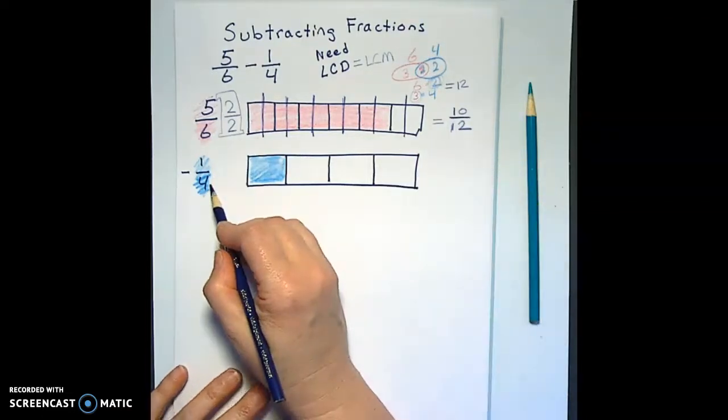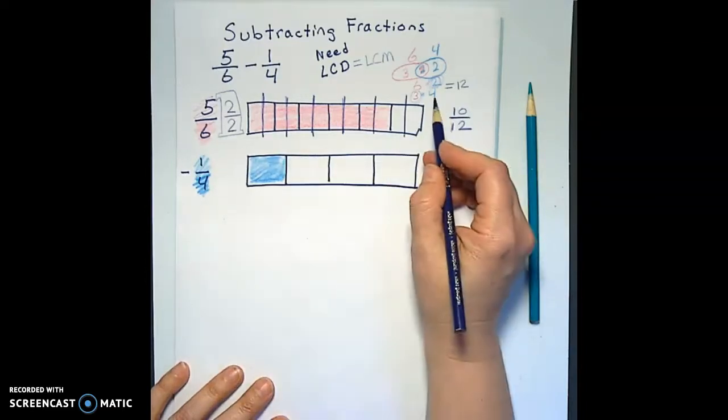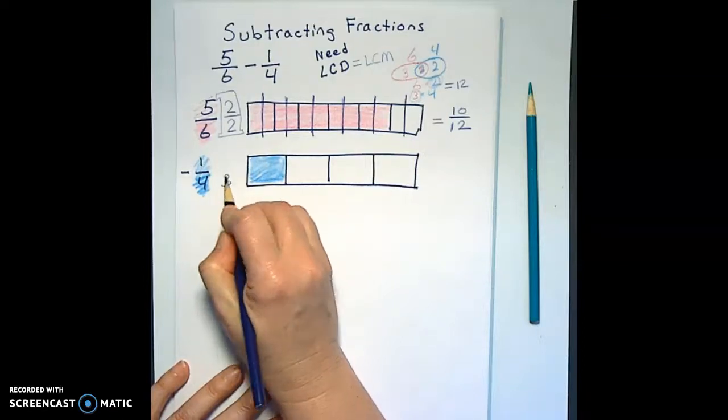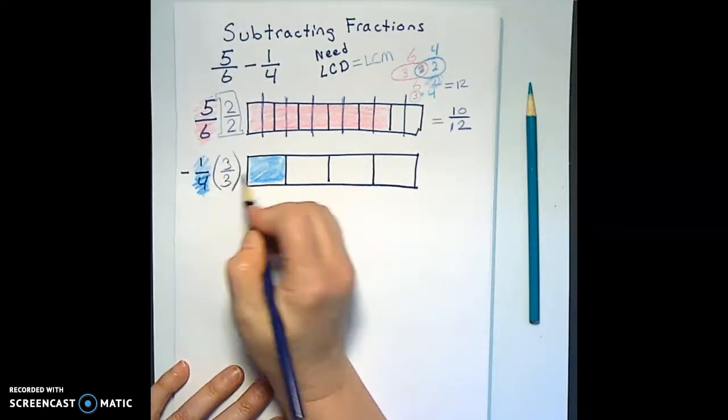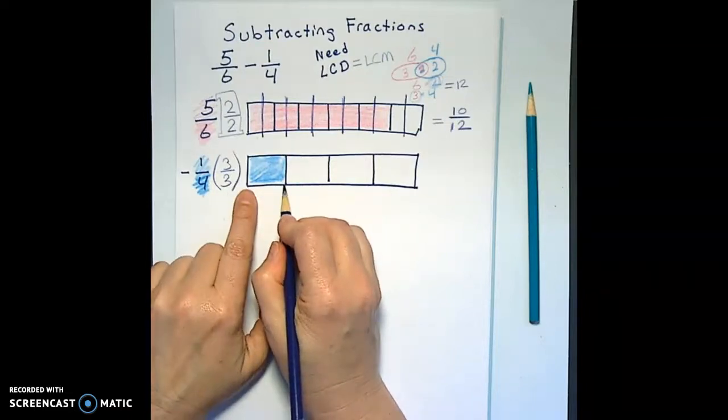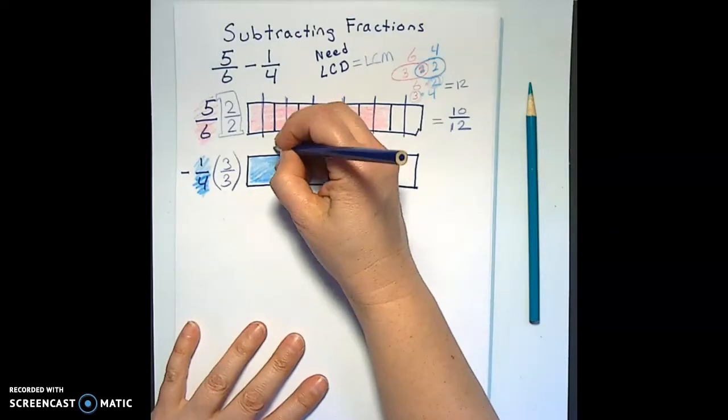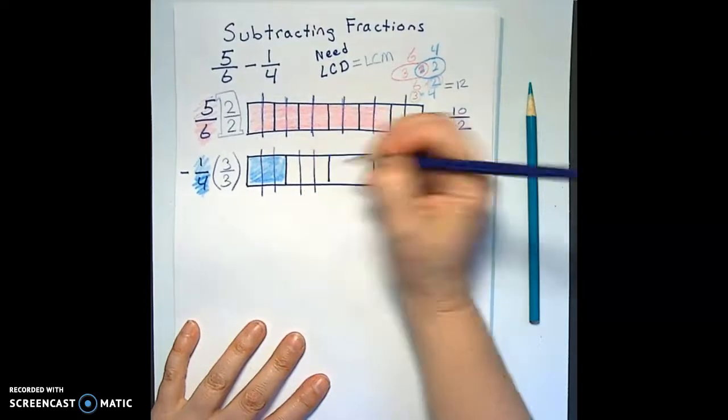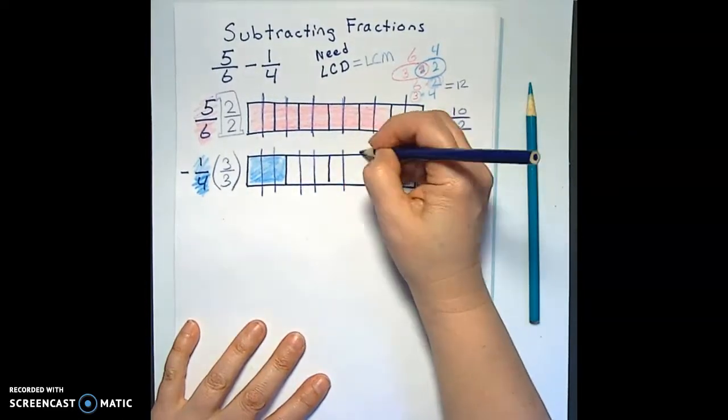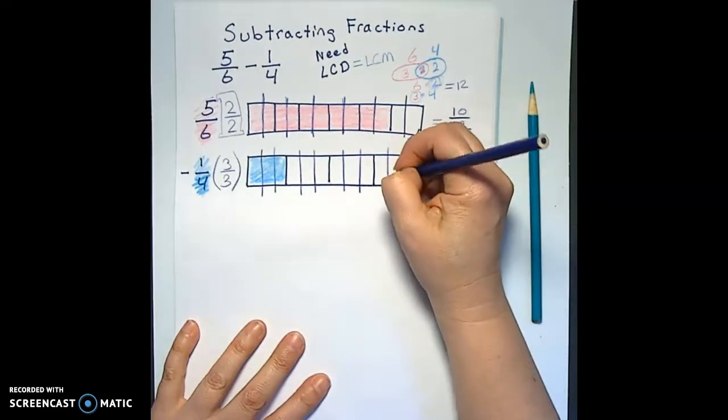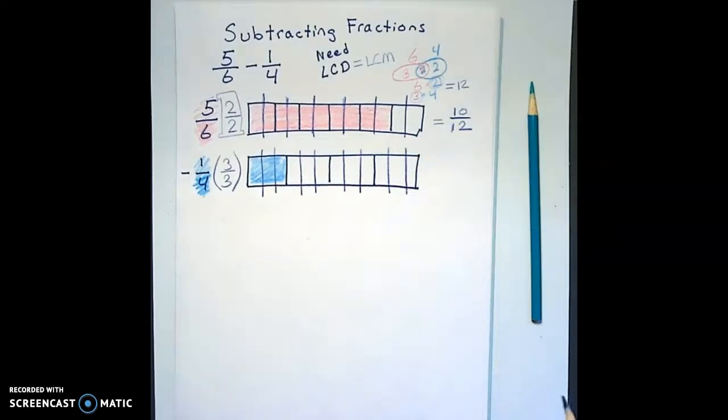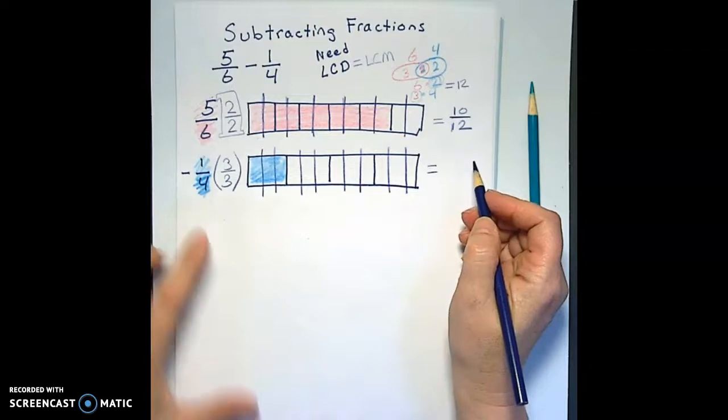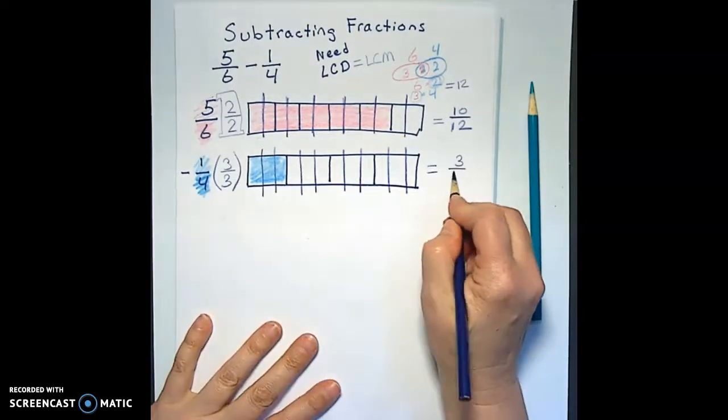So then for the fourths, we're going to do the same thing. The fourths, we're missing the factor of three to make the 12. So we put in a factor of three in both places. And we take each fourth and divide it into thirds. So we go bam, bam, that's divided into thirds. Bam, bam, bam, that's divided into thirds. And then all of a sudden, we see instead of one fourth, we see three twelfths.